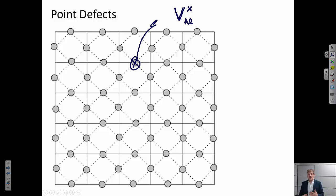The second type would be an interstitial. And that is if we have some other atom sitting in a site in this lattice that is not normally occupied.